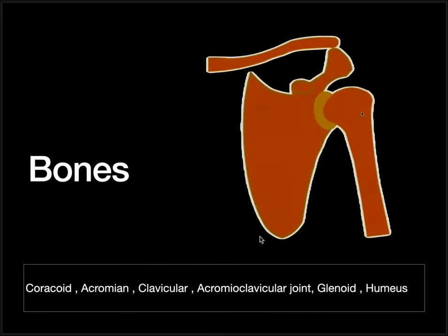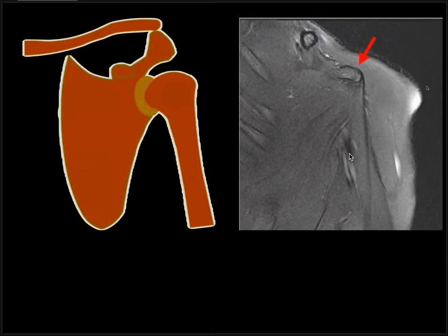Starting first with the bones. This is a diagrammatic representation of the scapula having a coracoid process, spinous process, and acromion process. This acromion process is articulating superiorly with the clavicle. We can also see the glenoid fossa which is articulating with the head of the humerus. On this MRI section, we can see this bony part — this is the coracoid process. The importance of this is that it is the most anterior bony projection, so if we can see the coracoid, we know we are in the anterior sections of the film.